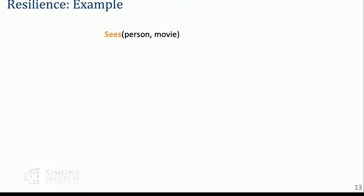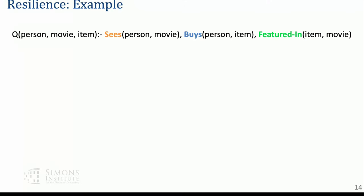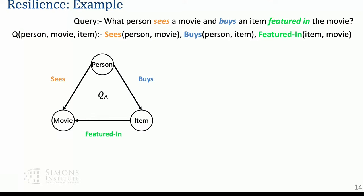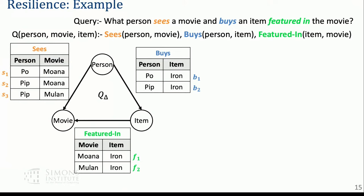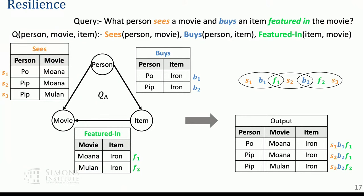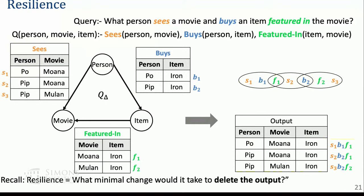Let me give an example for resilience. Pretend you're a data analyst with access to tables of people watching movies, items they buy, and product placements showing items featured in movies. You can ask: what person watches a movie and then buys an item from it? To a theoretician, this is a triangle query. You compute your output, get your output rows, and represent this as a query hypergraph where hyperedges are your witnesses. You want the minimum tuples to delete to make the output false — the transversal number of the hypergraph.